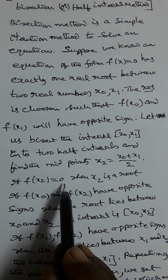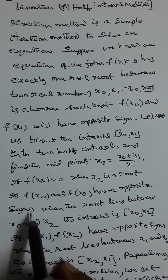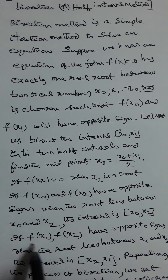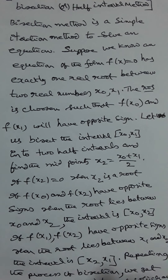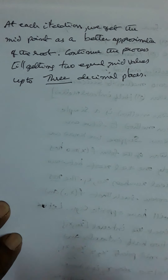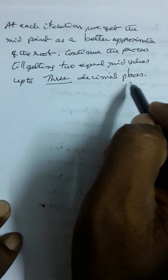If f(x₂) = 0, then x₂ is a root. If f(x₀) and f(x₂) have opposite signs, then the root lies between x₀ and x₂ — the interval is [x₀, x₂]. If f(x₁) and f(x₂) have opposite signs, then the root lies between x₁ and x₂ — the interval is [x₂, x₁]. Repeating the bisection process, we get successive smaller sub-intervals. At each iteration, the midpoint is a better approximation of the root. Continue the process until getting two equal mid-values up to three decimal places.